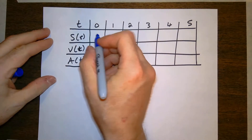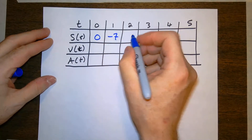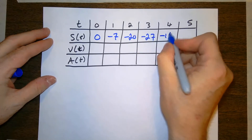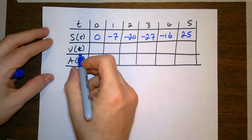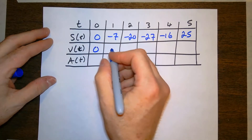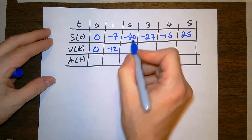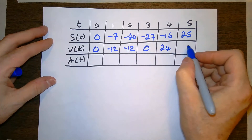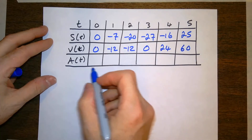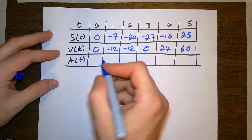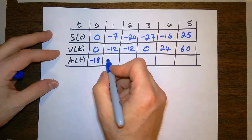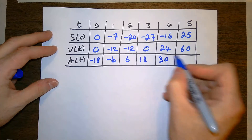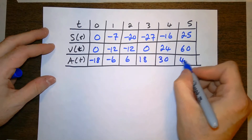So its position at time equals 0 is 0, at 1 is negative 7, at 2 is negative 20, at 3 is negative 27, at 4 is negative 16, and at 5 is 25. Its velocity at time equals 0 is 0, at 1 is negative 12, at 2 is negative 12, at 3 the velocity is 0, at 4 it's positive 24, and at 5 it's positive 60. The acceleration at 0 is negative 18, at 1 is negative 6, at 2 is positive 6, at 3 is positive 18, at 4 seconds positive 30, and at 5 seconds positive 42.